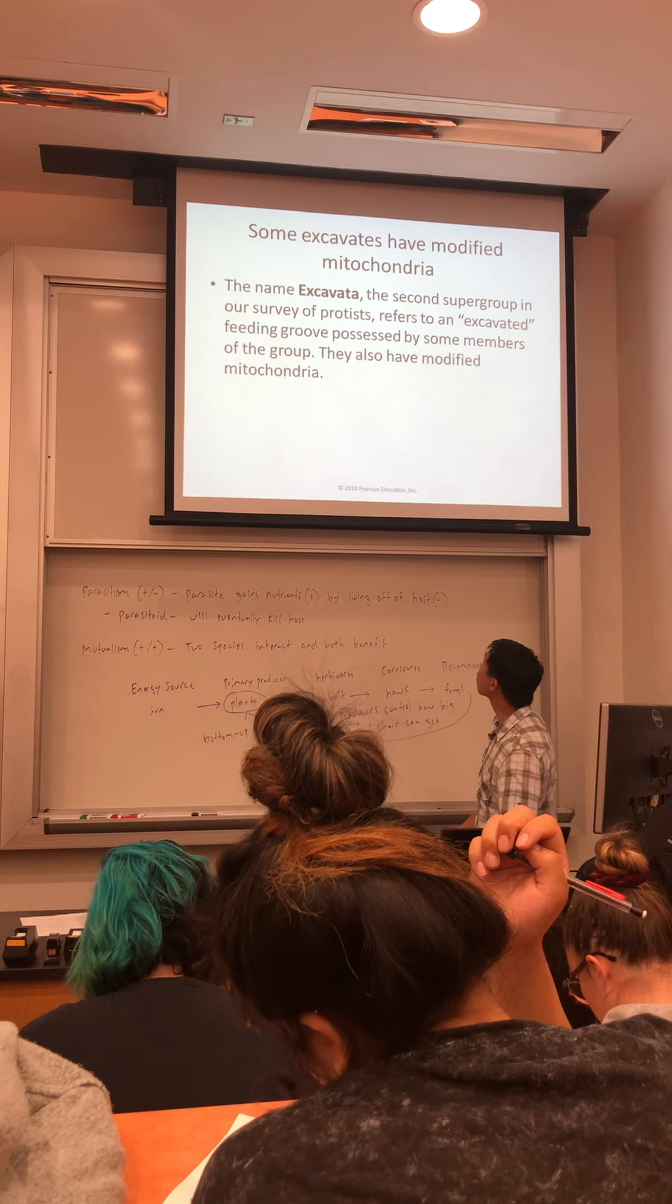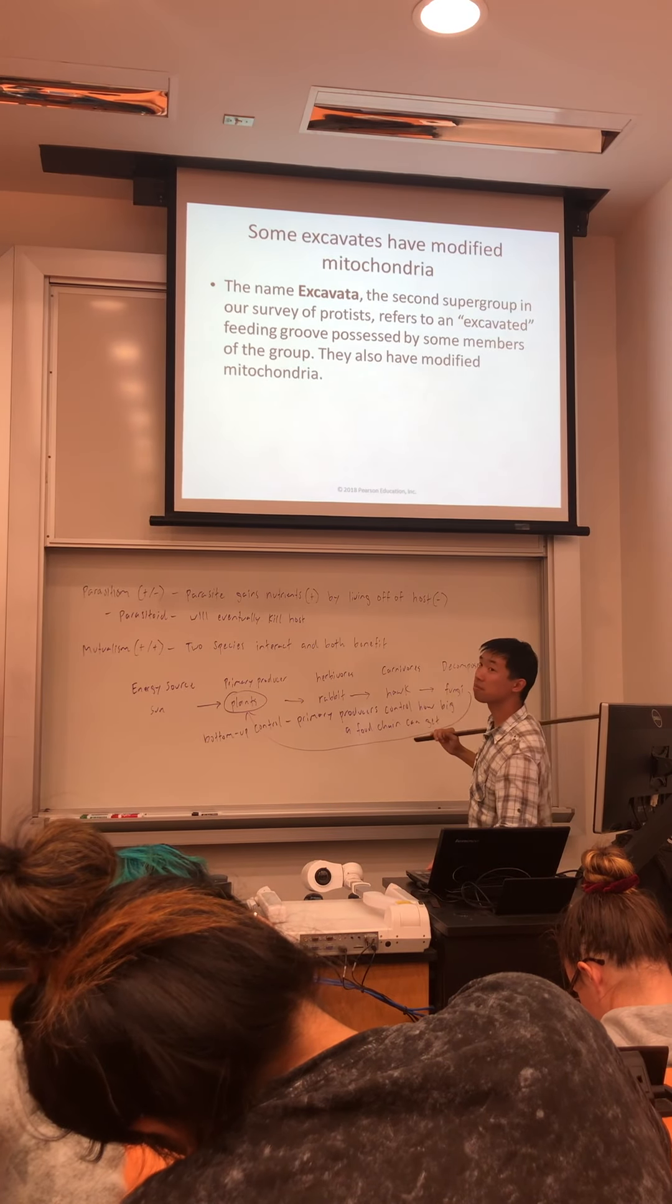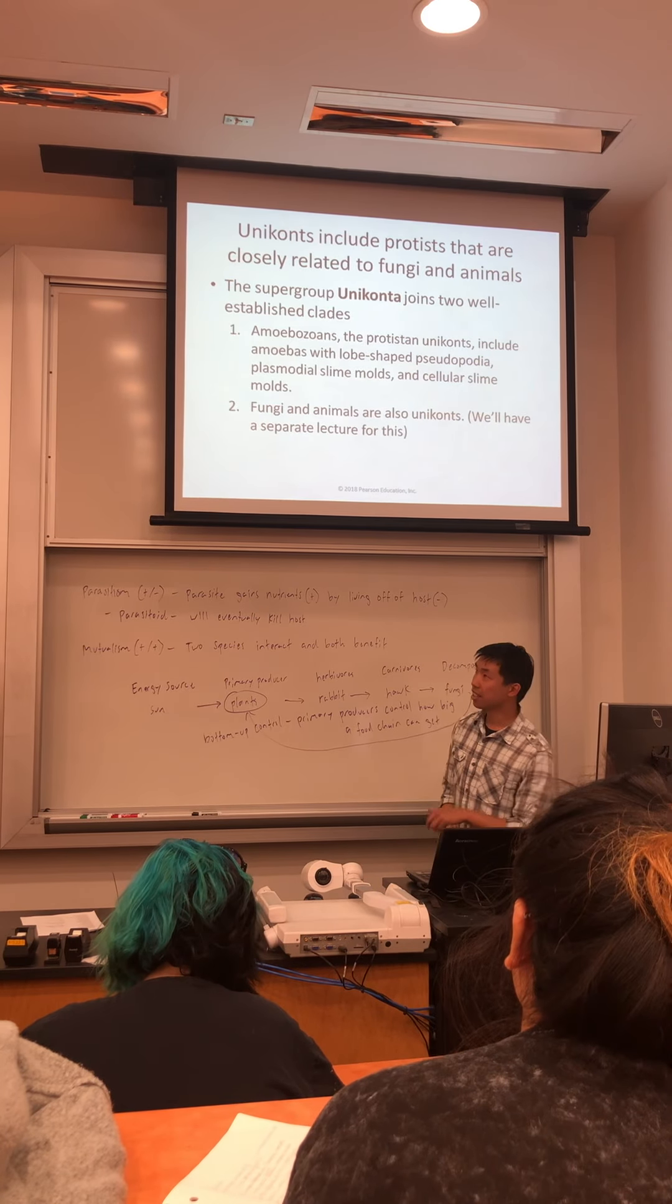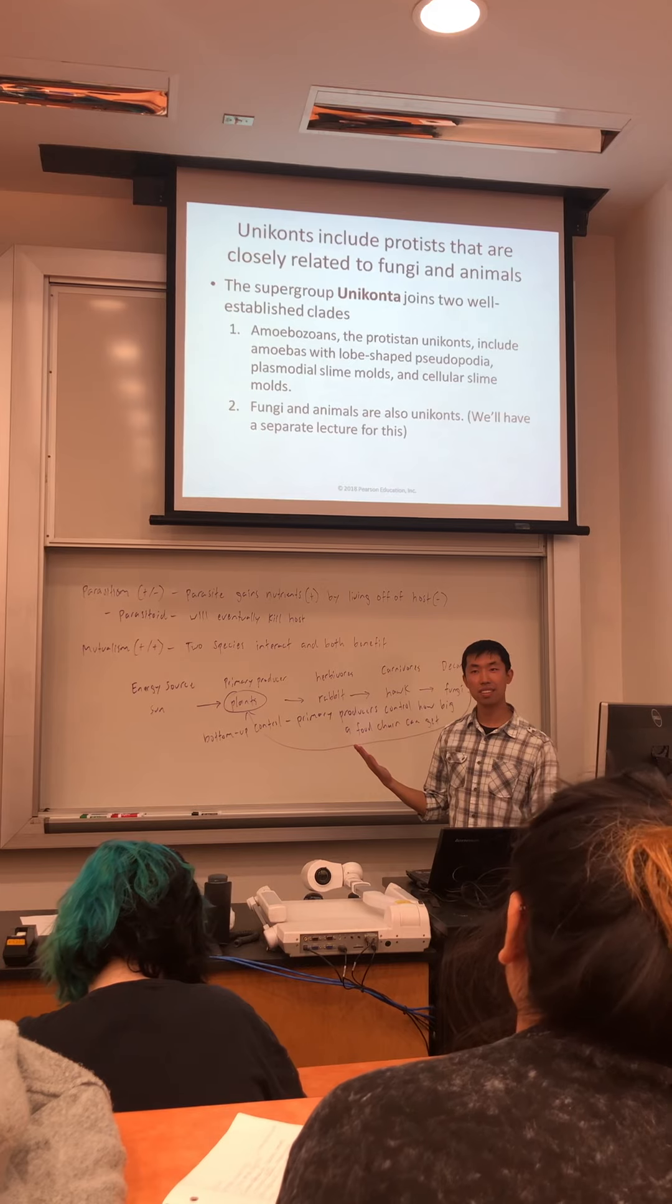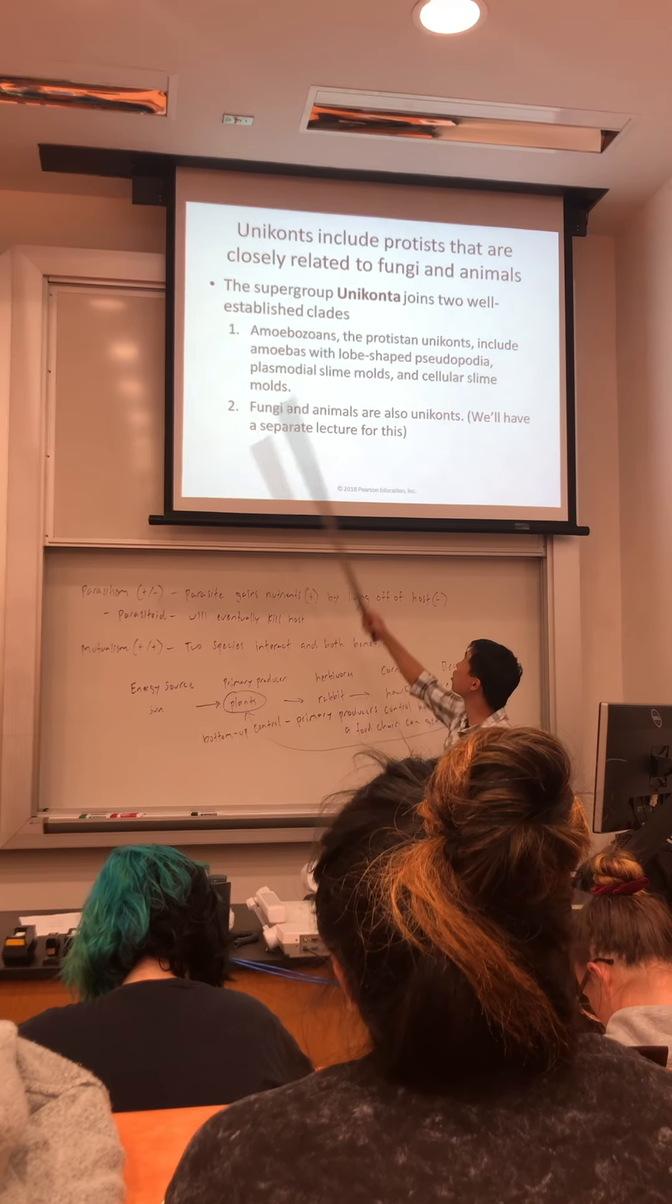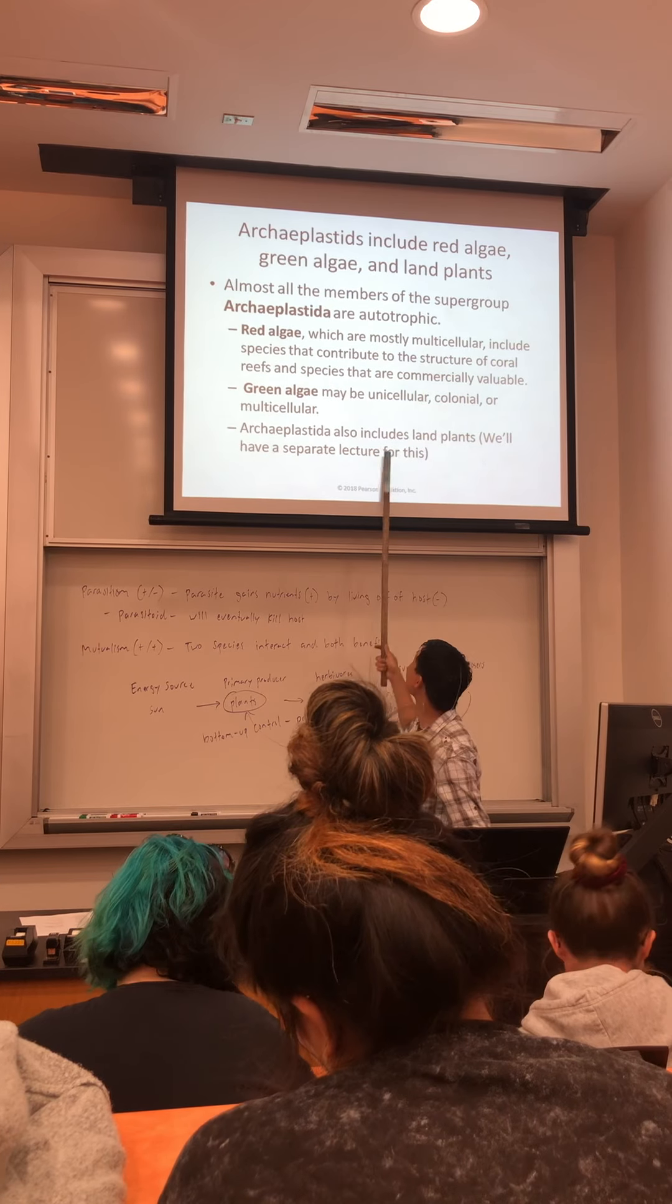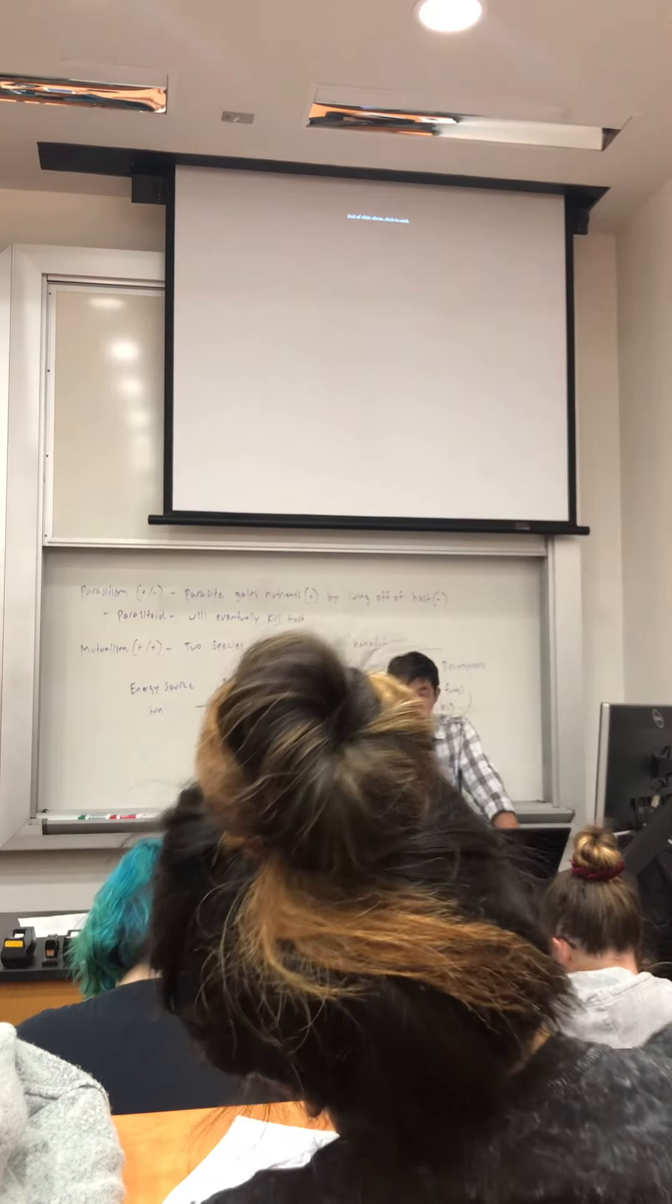Excavata: they all have an excavated feeding groove and modified mitochondria. You don't have to know these names, just know the key characteristics. Unikonts: know who are the members. I can ask which of the following does not belong in the supergroup Uniconta: amoebas, fungi, plants, animals, slime molds? The answer would be plants. Archaeoplastids include the green algae, the red algae, and technically the land plants too. That is the protist section. Any questions?